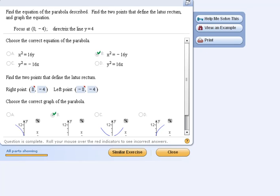Alright, for this problem it says find the equation of the parabola described. Find the two points that define the lattice rectum and graph the equation. So we have a focus at 0, negative 4, and then we also have a directrix at the line y equals 4.